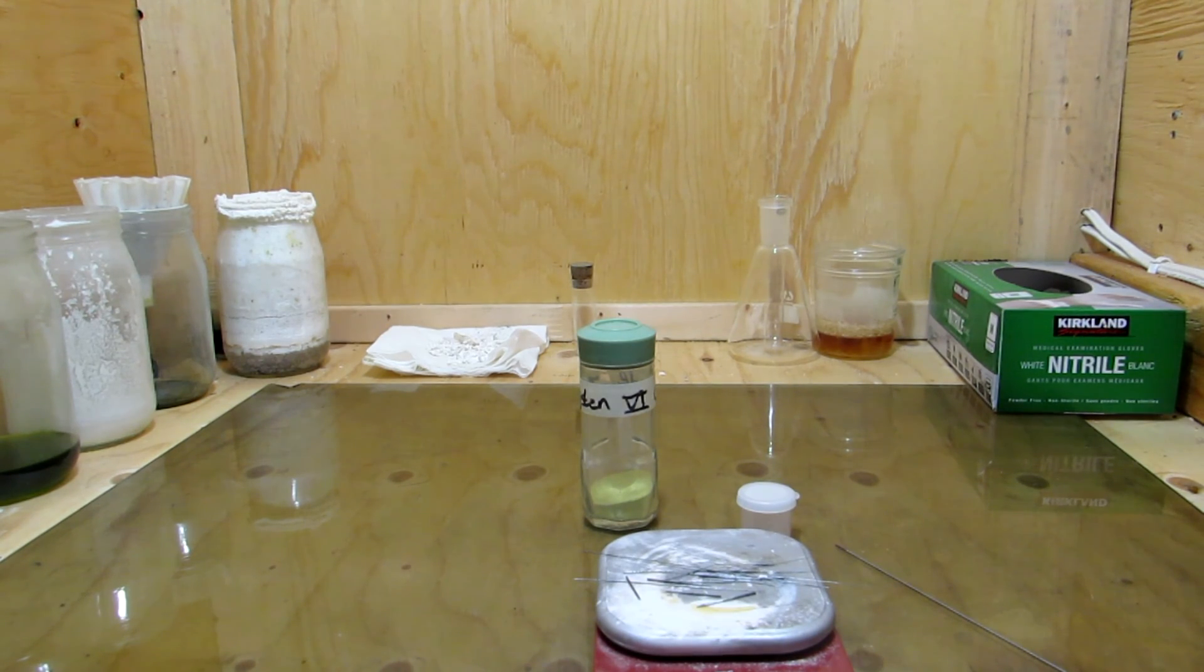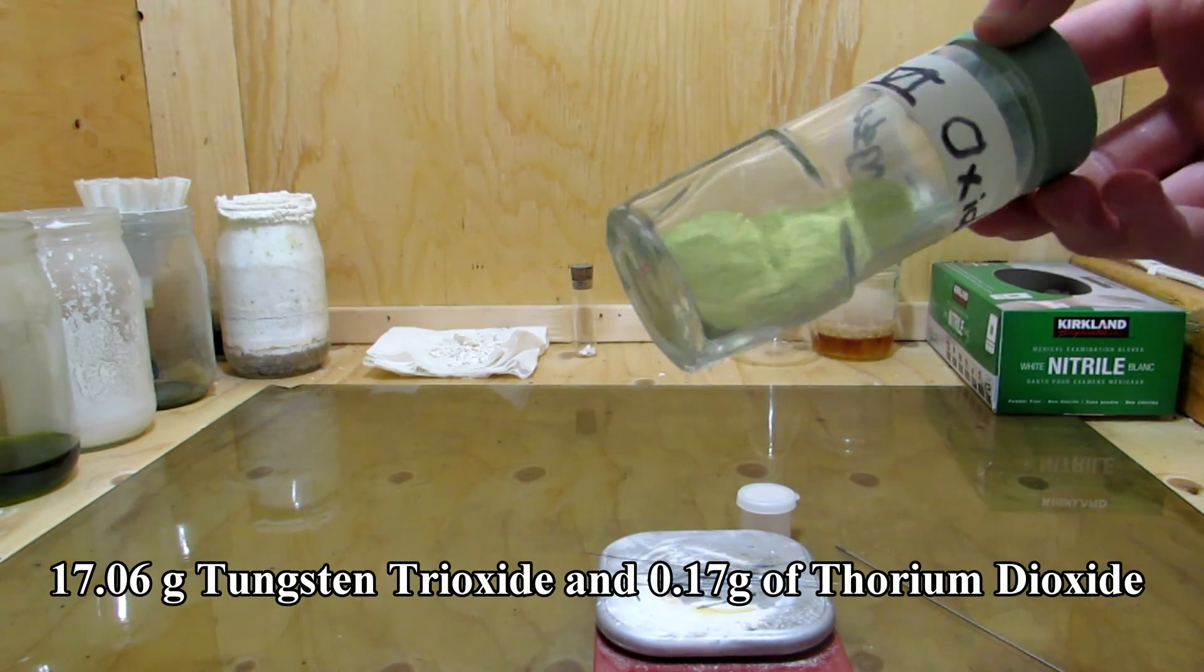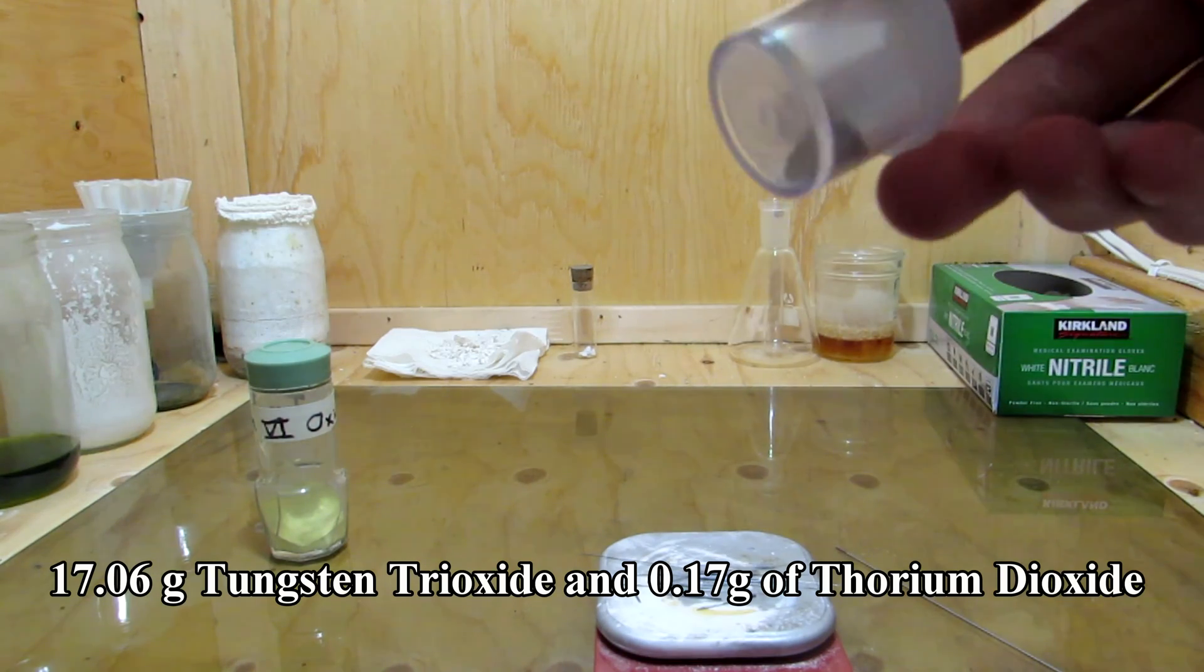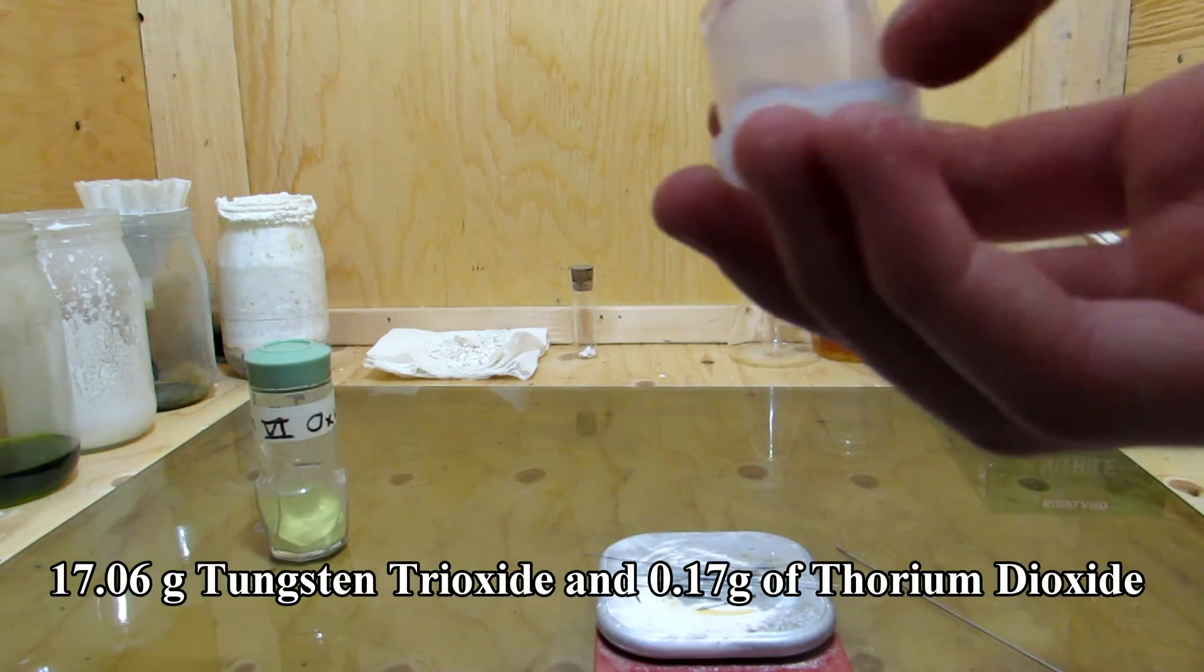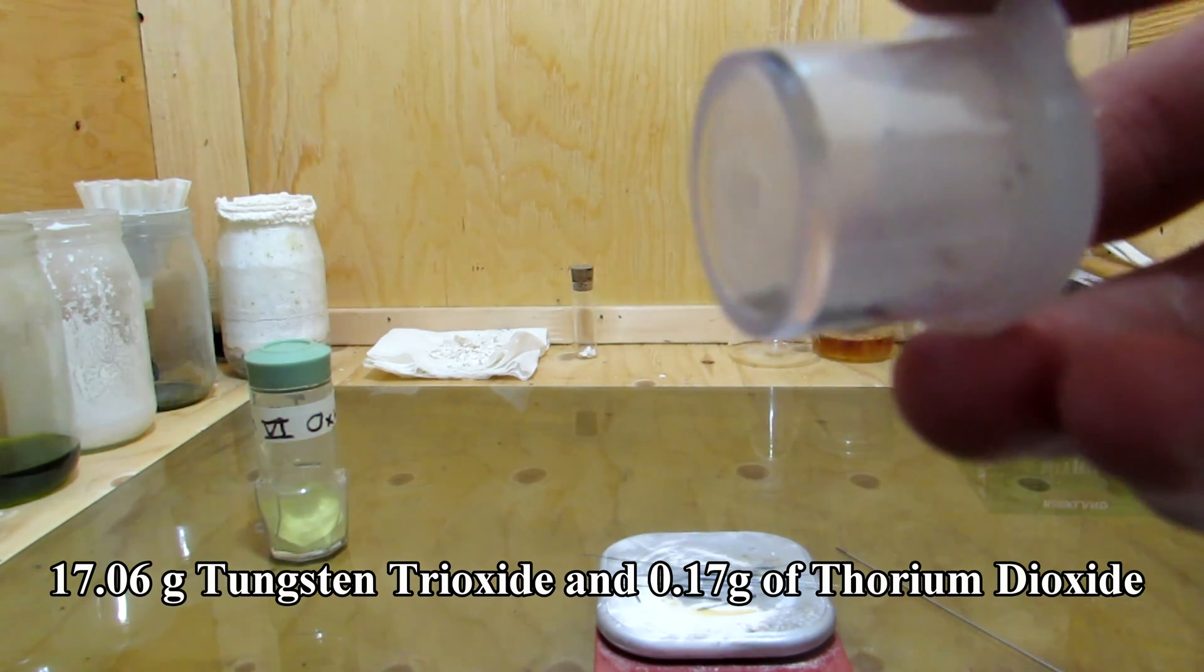After dehydrating the tungsten trioxide and thorium dioxide, 17.06 grams of tungsten trioxide and 0.17 grams of off-white thorium dioxide was obtained. From the 9 rods dissolved, 0.40 grams of thorium dioxide was expected.